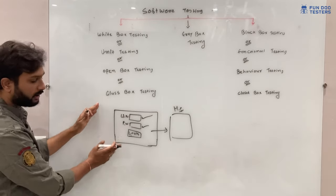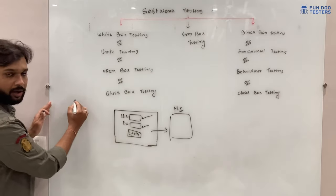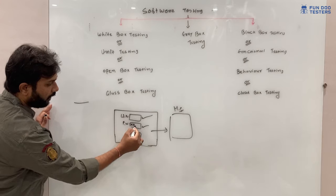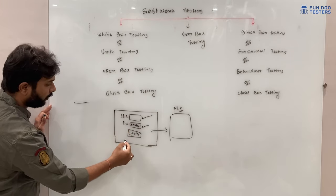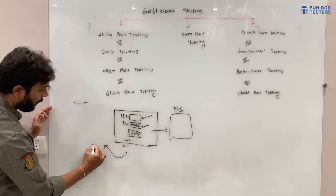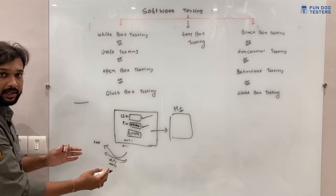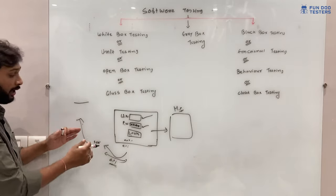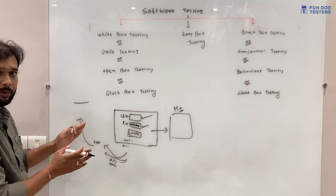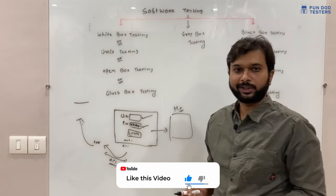In white box testing, the developer has implemented many things behind the functionality — for example, algorithms, password masking (showing stars or dots), encryption and decryption of data when it travels from the client browser to the server via API, and storing data in the database. From the login functionality alone there can be hundreds or thousands of lines of code. Developers test each and every line — that is white box testing.